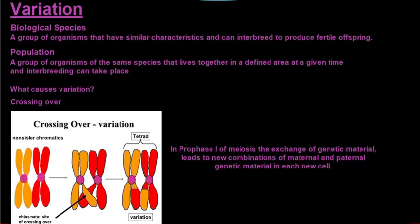Let's quickly look at the definition for biological species and population. A biological species is a group of organisms that have similar characteristics and can interbreed to produce fertile offspring - very important. A donkey and a horse can cross-breed but will not produce fertile offspring; they produce a mule, which is infertile. A population is a group of organisms of the same species that lives together in a defined area at a given time and they can interbreed. For example, a kudu population in Kruger National Park are all the same species living in a defined area at the same time.